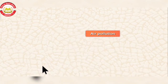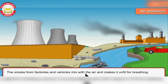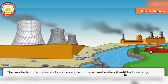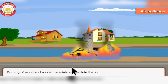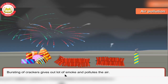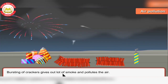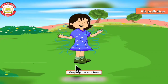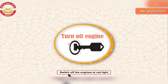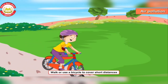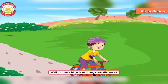First, air pollution. Smoke from factories and vehicles mixes with the air and makes it unfit for breathing. Burning of wood and waste material also pollutes the air. Bursting of crackers gives a lot of smoke and pollutes the air. To keep the air clean: plant more trees, switch off the engine at red lights, and walk or use a bicycle to cover short distances.